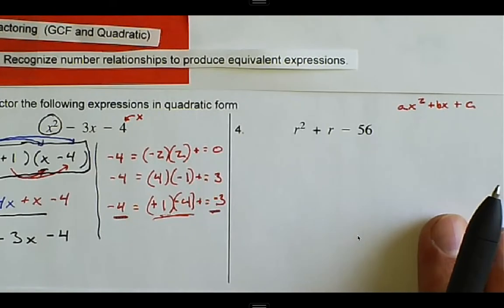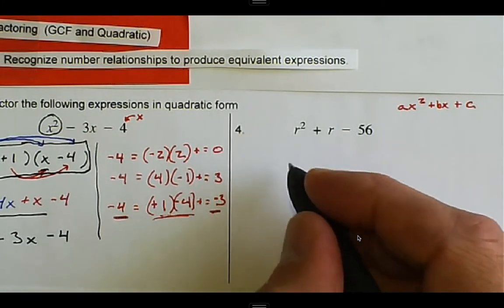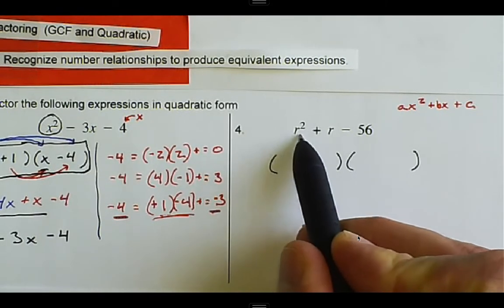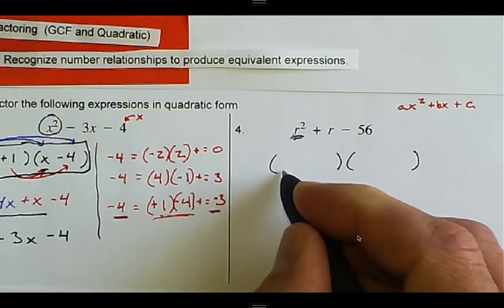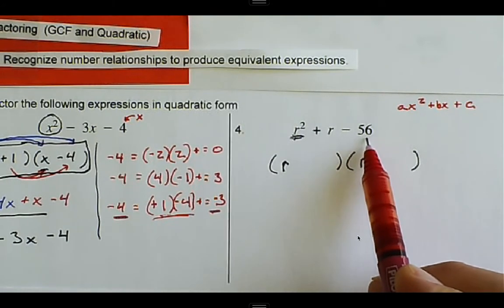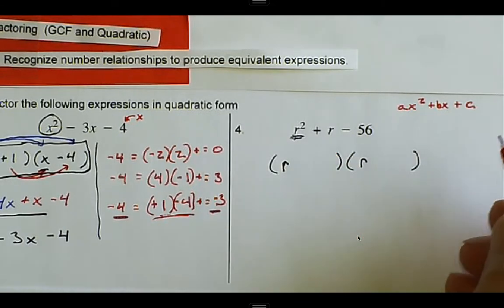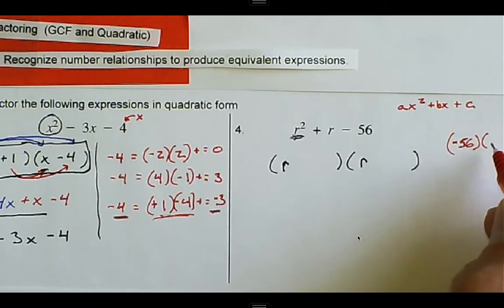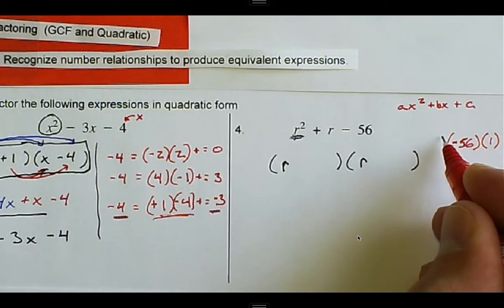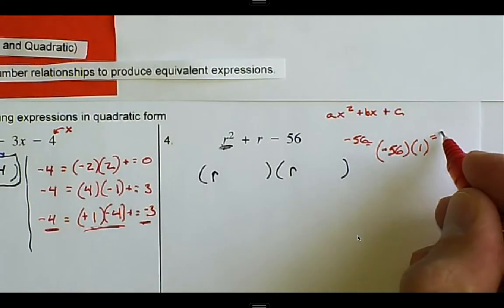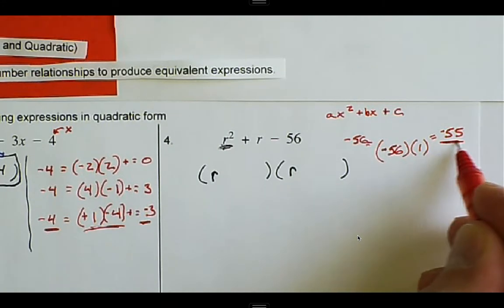We have another example to work with. We know it's a quadratic and we want to get it in factored form. The leading terms are r and r since the lead coefficient is one. Now we need two numbers that multiply to negative 56 and add to one. We could try negative 56 and one — they multiply to negative 56, but they add to negative 55, which is nowhere near one.